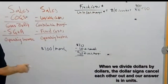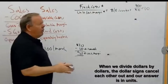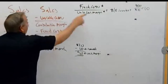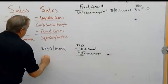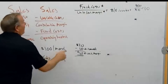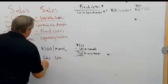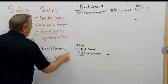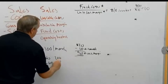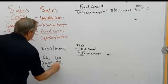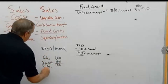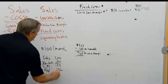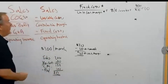We can test this: if we sell 10 bottles, sales are $200, variable costs are $100, contribution margin is $100, minus $100 fixed costs equals zero operating income — we just break even. That confirms our formula works.